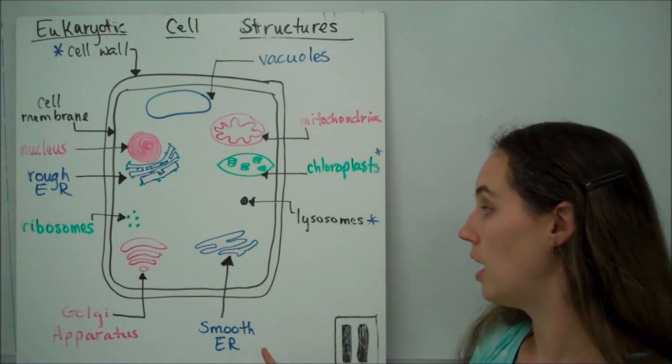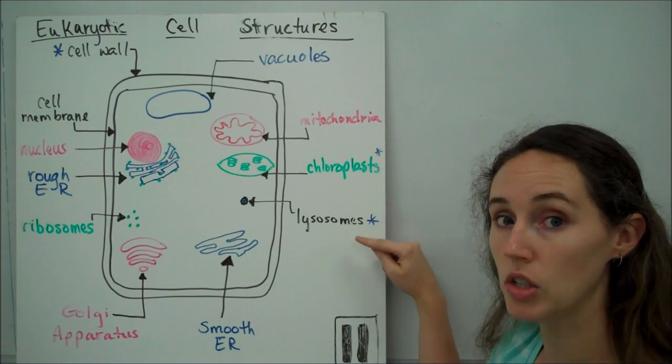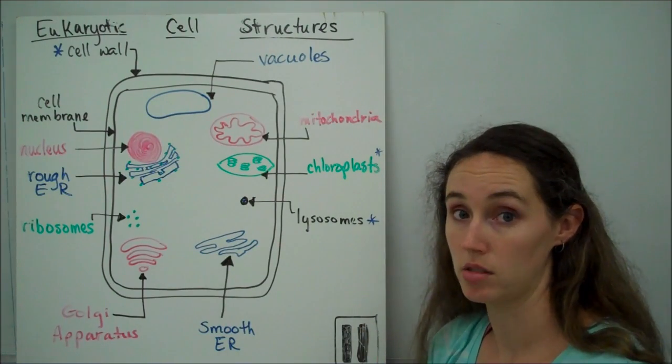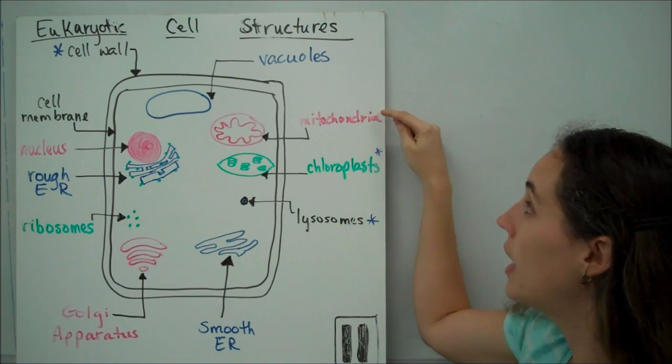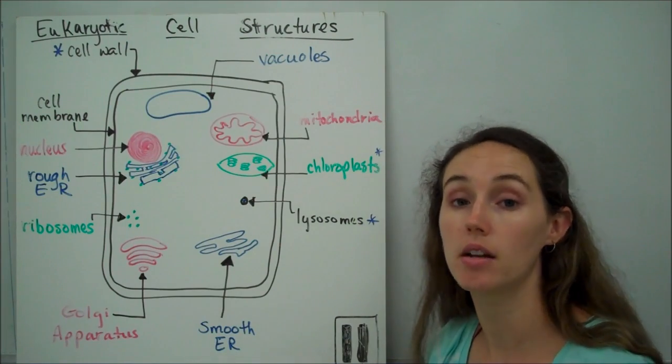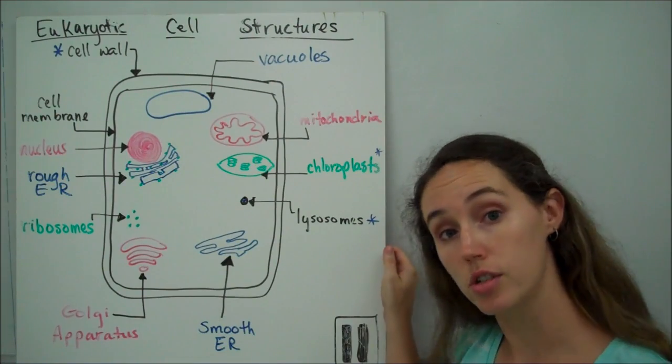that's fun to say, smooth endoplasmic reticulum, lysosomes, chloroplasts, some but not all eukaryotes have these. All right, everybody's got mitochondria, and vacuoles. Vacuole size can vary, depend on the kingdom. So, let's look again at what each of these structures does.